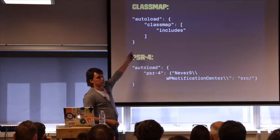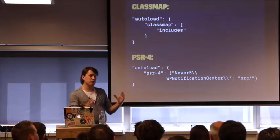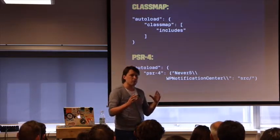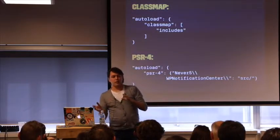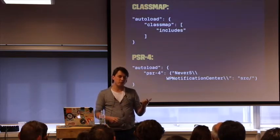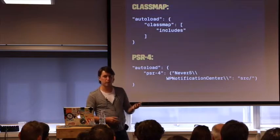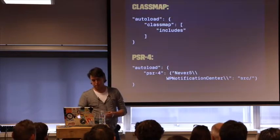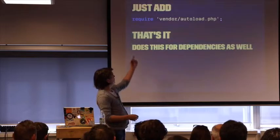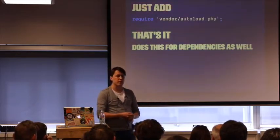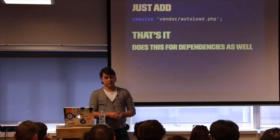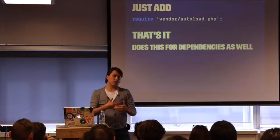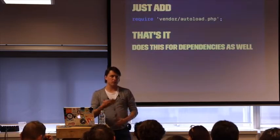You can also use it for just a class map. You define where your classes live and Composer will figure out what class lives in what file. You no longer have to manually include the file where a class lives — you can just fire 'new Post' in your code and the Composer autoloader will figure out which file it needs to include. In your code, you just require the autoloader.php file in the vendor directory — that's where all the magic happens. And it does this for dependencies as well.